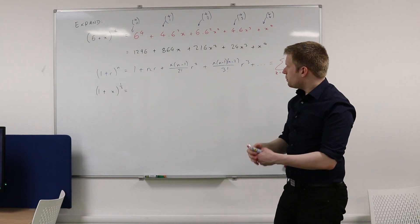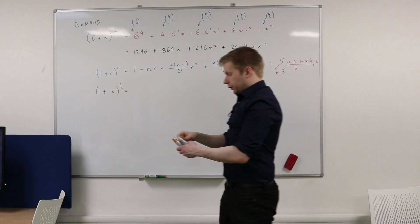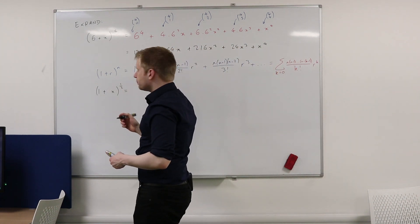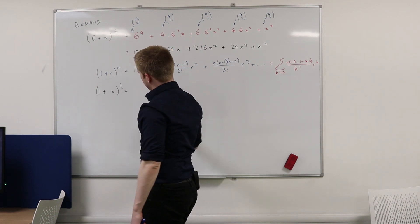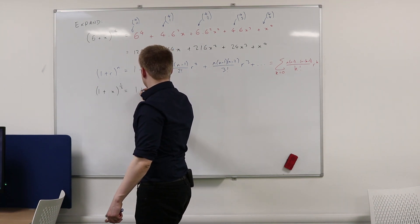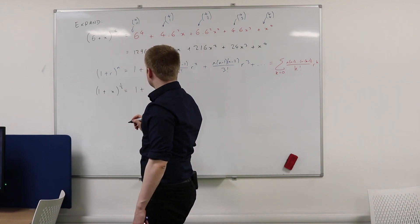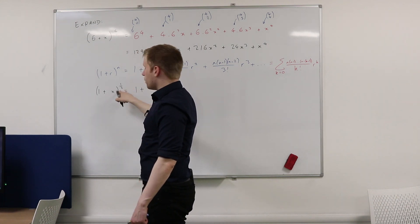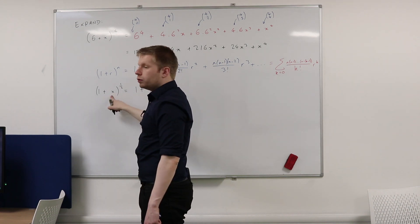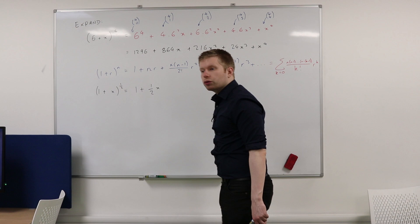So let's do this. What would this be equal to using this term? What would they be equal to? Just using this. Because n, remember, is a half. So half and r is equal to x.